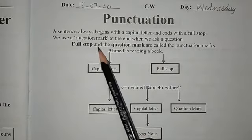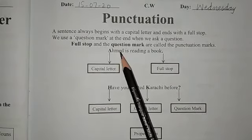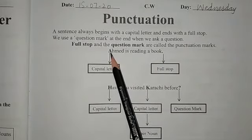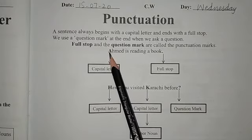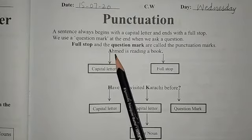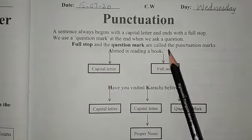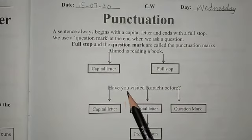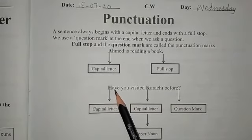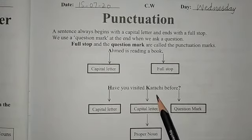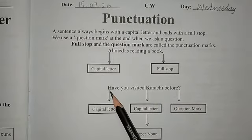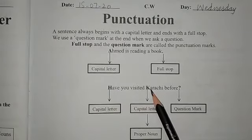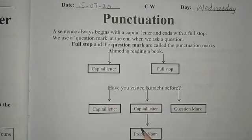Here's a sentence: 'Ahmed is reading a book.' This sentence begins with a capital letter. Ahmed is also a proper noun, so the first letter is capital. The sentence ends with a full stop. 'Have you visited Karachi before?' — here a helping verb is used at the start, so it's a question. The first letter of 'Have' is capital, and Karachi's K is capital because it's a proper noun.